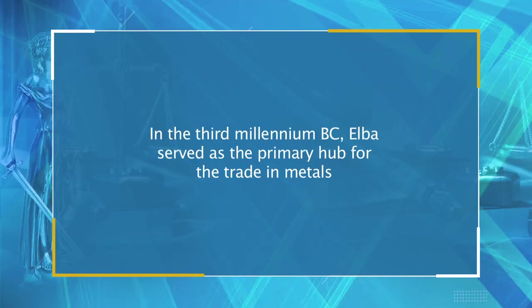The records found at Mari contained references about wine, which was considered as the beverage of the wealthy. In the third millennium BCE, Ebla served as the primary hub for the trade in metals. In their expansionist endeavours, Sargon and his successors advanced as far as Elam along the eastward trade routes. Military campaigns enhanced the flow of goods from regions that were firmly under the control of the imperial centre, while those areas not governed by Sargon were engaged in limited trade.